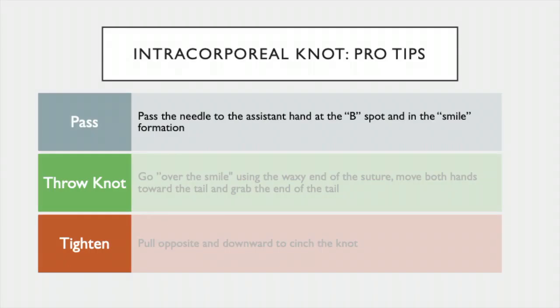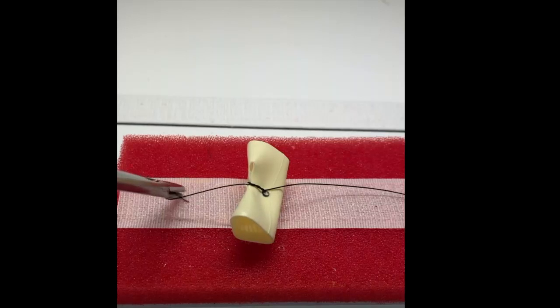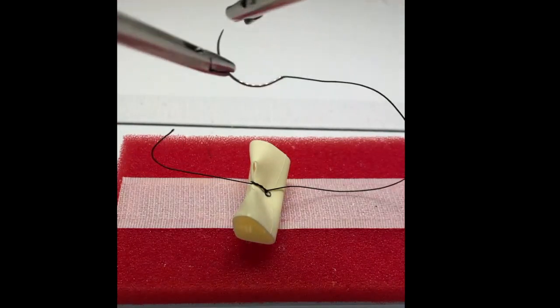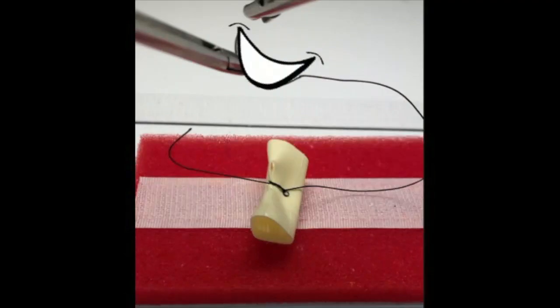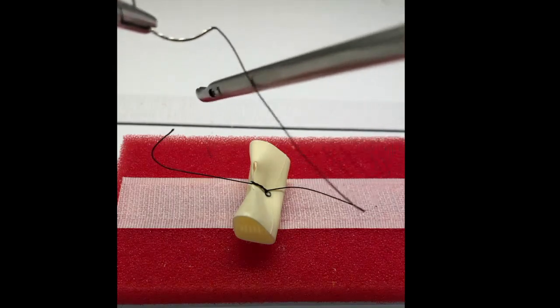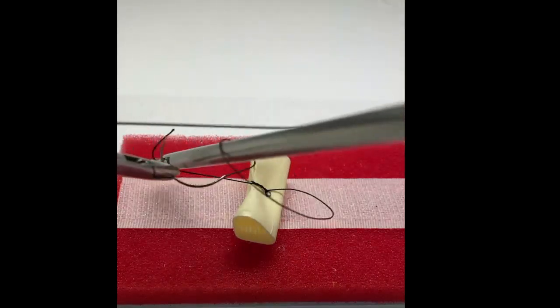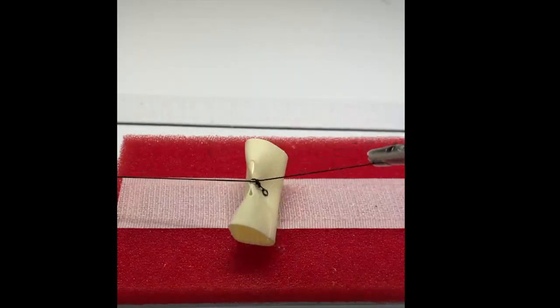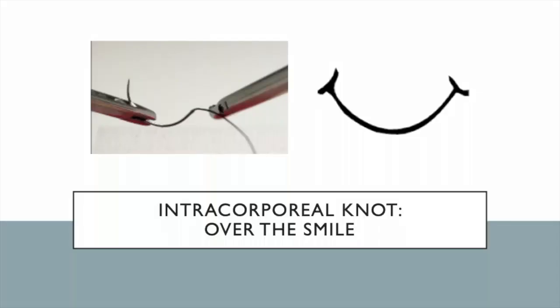The next pro tip is passing. Rotate the driver and transfer the needle to the non-dominant hand at the B position. This creates a smile orientation with the needle tip facing up. Using the same stiff part of the suture, go over the smile once. Move both hands, grab the tail, and pull laterally and downward to cinch the knot. As before, the smile orientation uses the stiffest part of the suture, making knot tying efficient and easy.